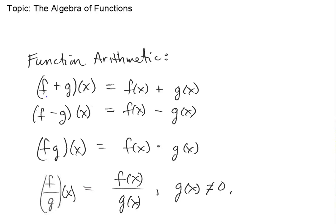When you see the notation (f + g)(x), one way to read that is 'f plus g of x.' Using the function notation we're used to, it turns out that equals f(x) plus g(x). It's fairly intuitive — almost like you're distributing the x into both functions, though that's not quite what's happening; that's just what the notation looks like.